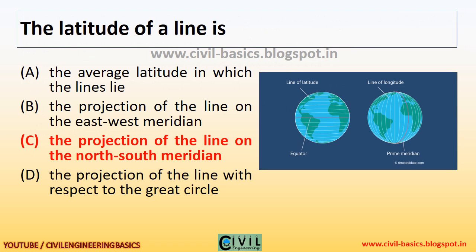The latitude of a line is the projection of the line on the north-south meridian.